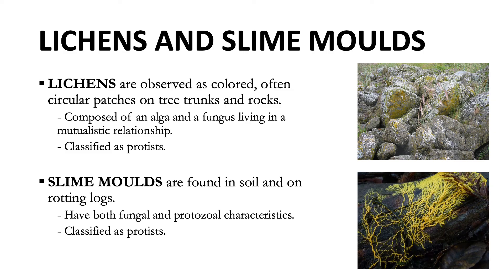Lichens and slime molds are both classified as Protista. Lichens are observed as colored, often circular patches on tree trunks and rocks. For many years it was thought a lichen represents a combination of two organisms — an alga or cyanobacterium and a filamentous fungus — in a mutualistic relationship. Recent evidence suggests a third organism, a yeast, may also be present embedded in the cortex of the lichen. Lichens are not associated with human disease. Slime molds are found in soil and on rotting logs; they have both fungal and protozoan characteristics, have been transferred to the Kingdom Protozoa, and are not known to cause human disease.